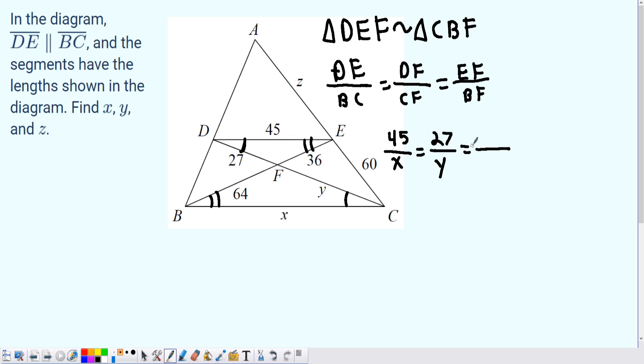Then finally we have EF being 36, and BF is 64. Well, 36 over 64 is definitely a reducible fraction, and we can reduce that into 9 over 16 because they are both divisible by 4.